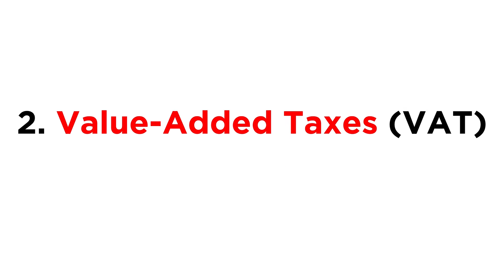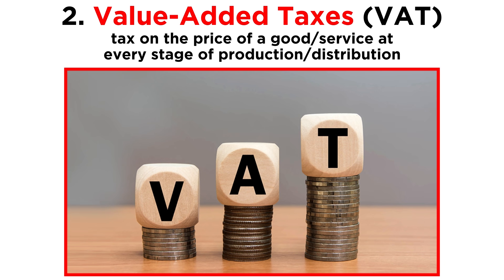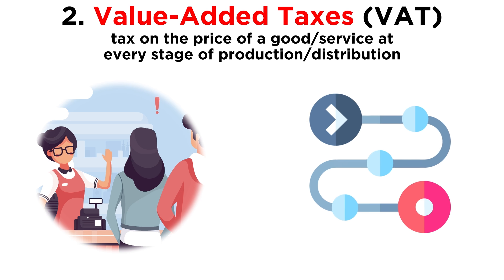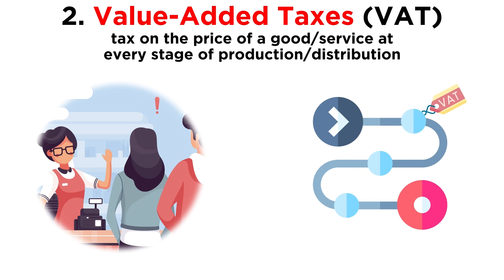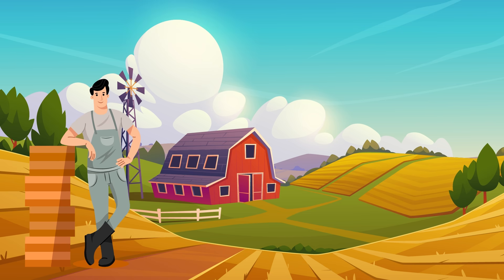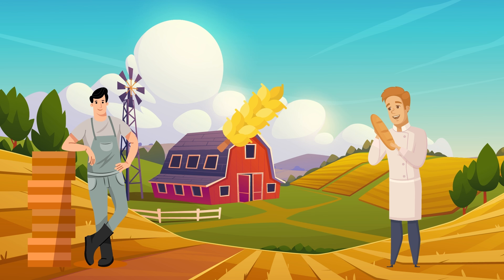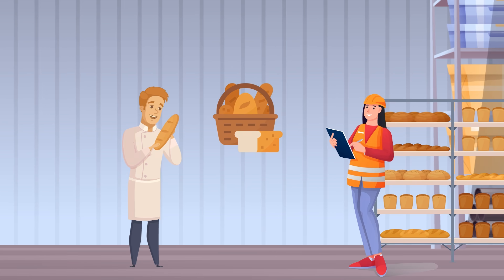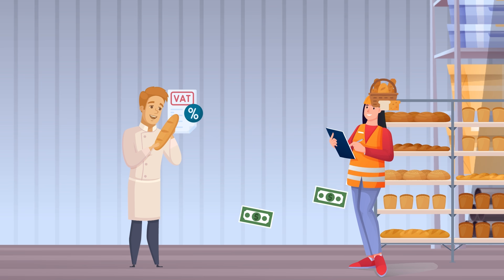Number two: value-added taxes. A value-added tax, or VAT, is a tax on the price of a good or service at every stage of production or distribution. It's similar to a sales tax, but instead of just being applied to the stuff sold to the consumer, it is applied repeatedly for every point of sale at which value has been added. For example, a farmer sells wheat to a baker — value has been increased, so a VAT is collected by the farmer. Next, the baker sells his bread to a wholesale bakery supply distributor — value has once again been increased, so an additional VAT is collected by the baker.